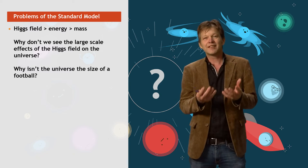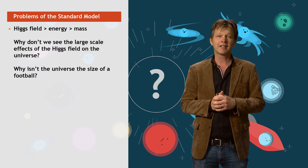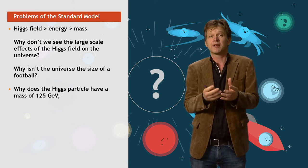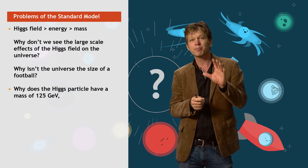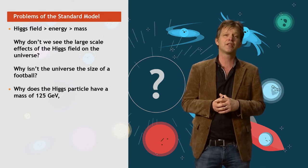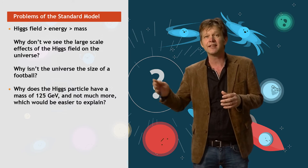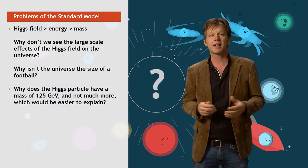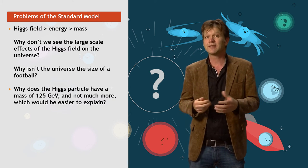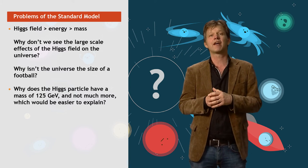And further, we don't understand why the Higgs particle, and this is a bit more abstract, itself has the mass of 125 GeV. As we have observed at the LHC, it would have been much better explained if the Higgs particle would have a mass many orders of magnitude larger. Really many orders, like 10 to the 19 GeV, would be much better to explain. So, why actually is the mass of the Higgs particle very light? These are fundamental questions that we do not have an answer to.